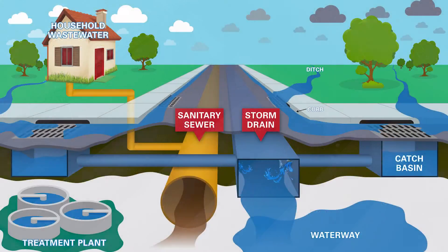This illustration shows the sanitary system and the storm system. The storm system is also referred to as the storm drain. Although these two systems serve different purposes, they are often near each other.